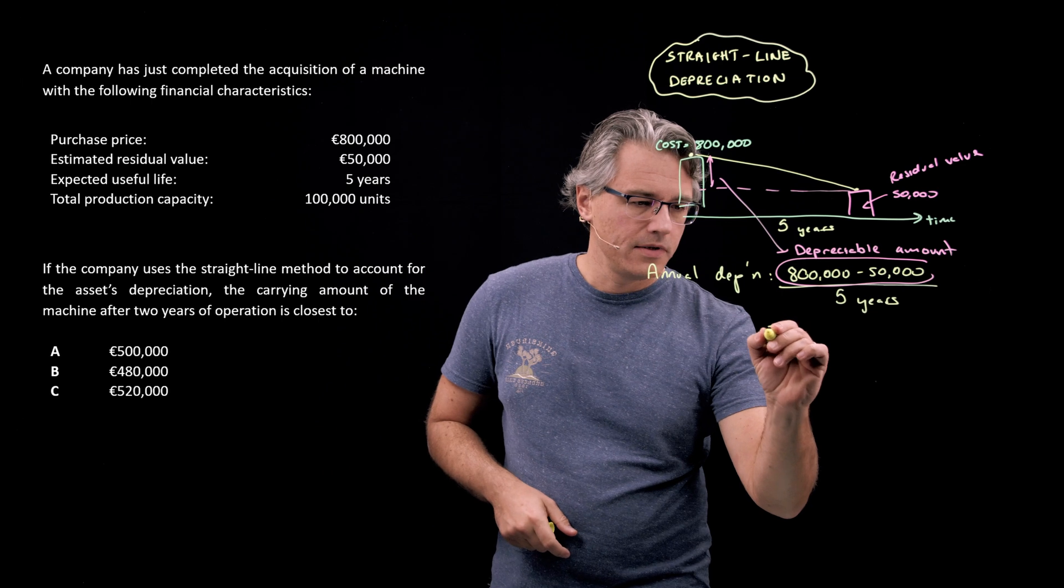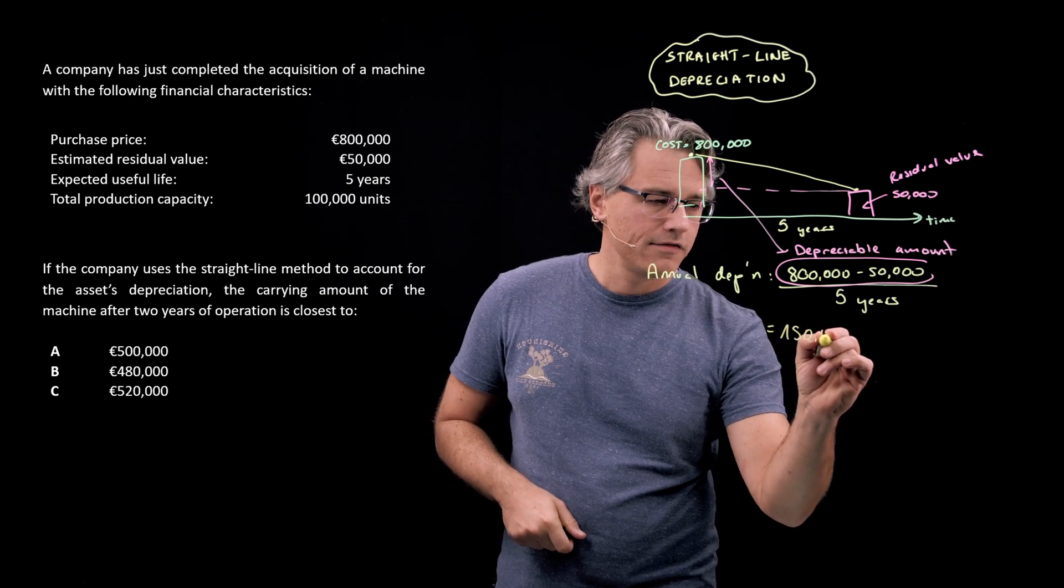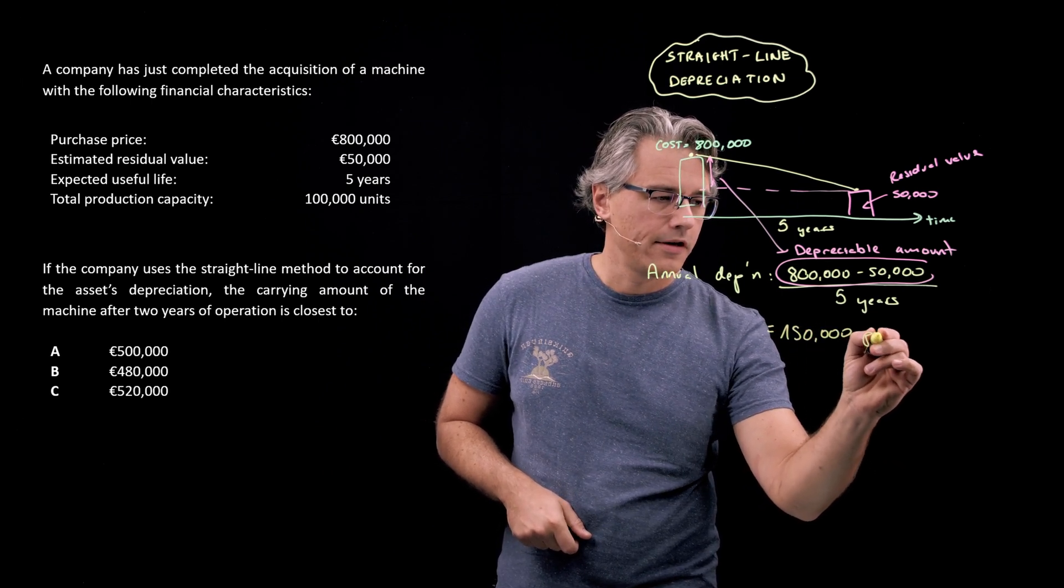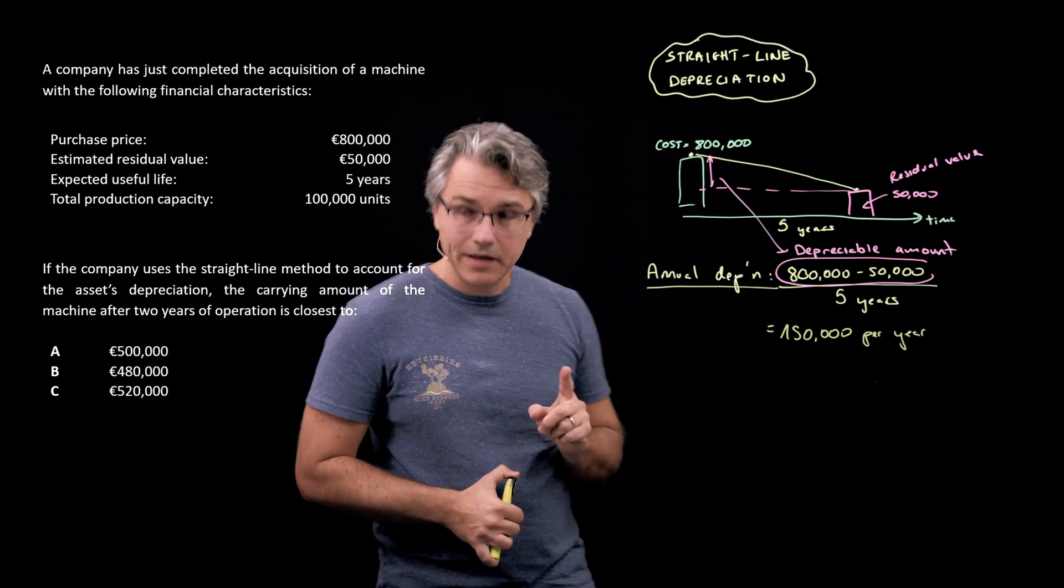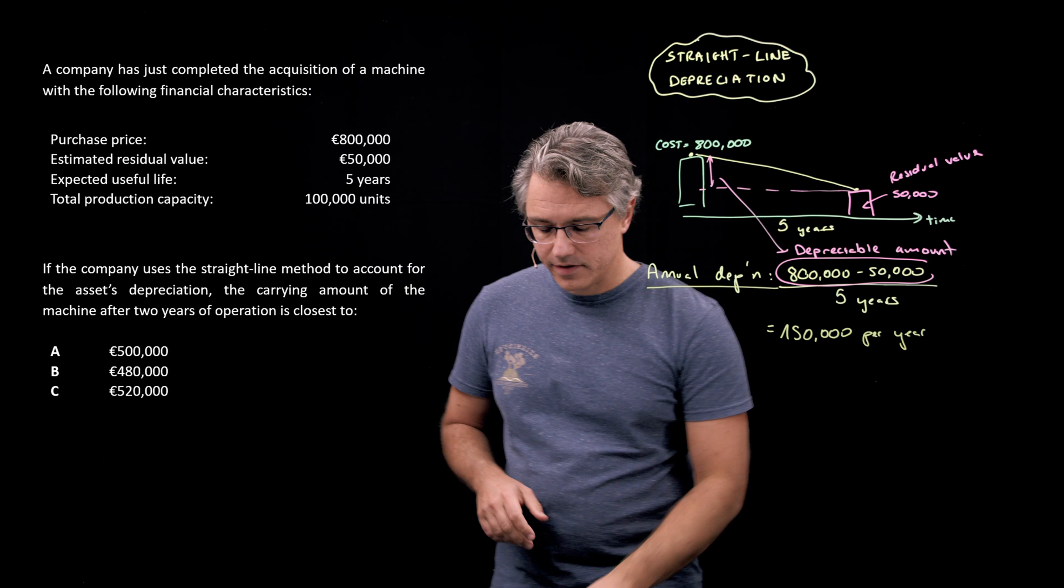Anyways, we've got €750,000 over here divided by five - that's going to be €150,000 per year in terms of annual depreciation.